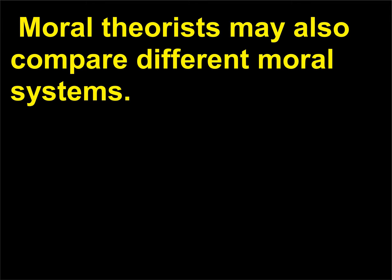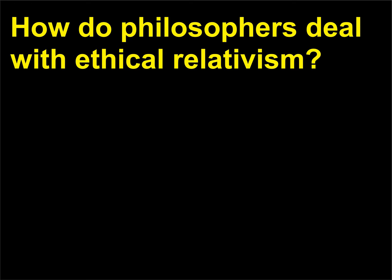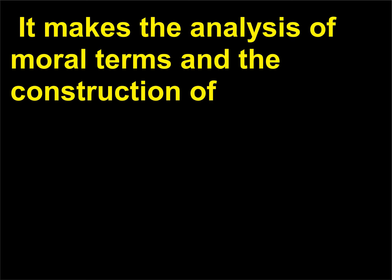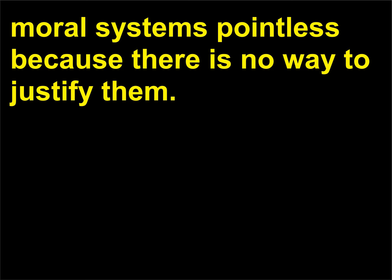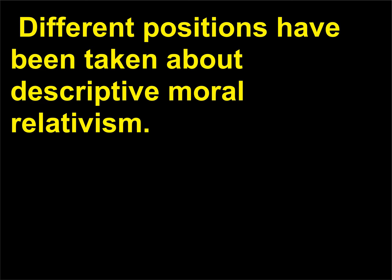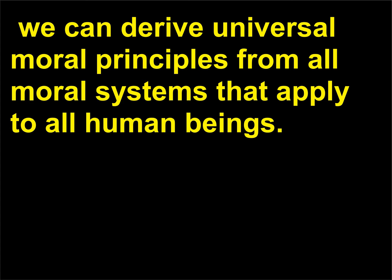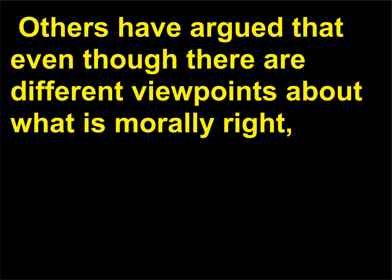How do philosophers deal with ethical relativism? Philosophers intensely dislike prescriptive ethical relativism. It makes the analysis of moral terms and the construction of moral systems pointless because there is no way to justify them. Different positions have been taken about descriptive moral relativism. Some philosophers deny it, claiming that once we understand moral systems that seem to be different from our own, we can derive universal moral principles from all moral systems that apply to all human beings. Others have argued that even though there are different viewpoints about what is morally right, some of those viewpoints are simply wrong, and then their job is to show how they are wrong.